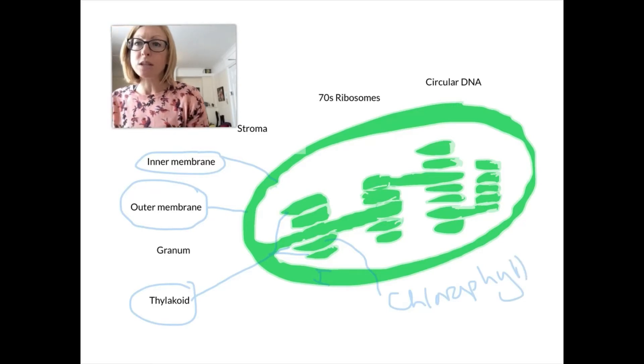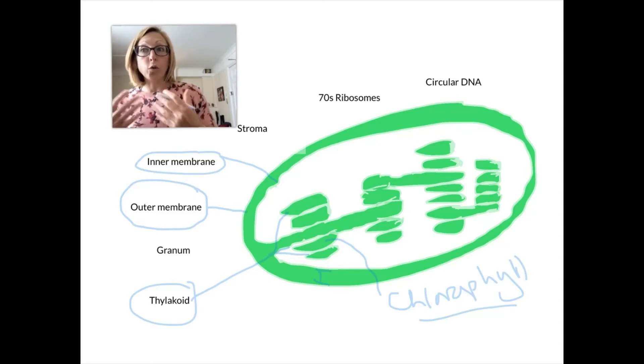The point of having lots of these flattened areas stacked on top of each other is to give a really large surface area so that chlorophyll can absorb as much light as possible for photosynthesis.